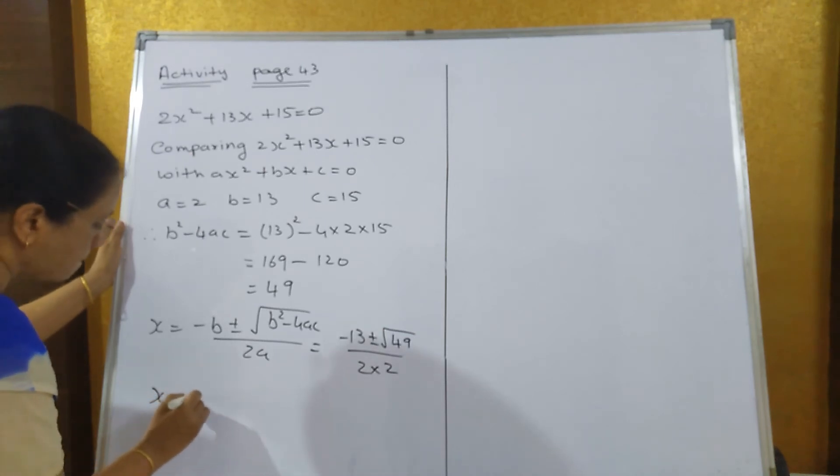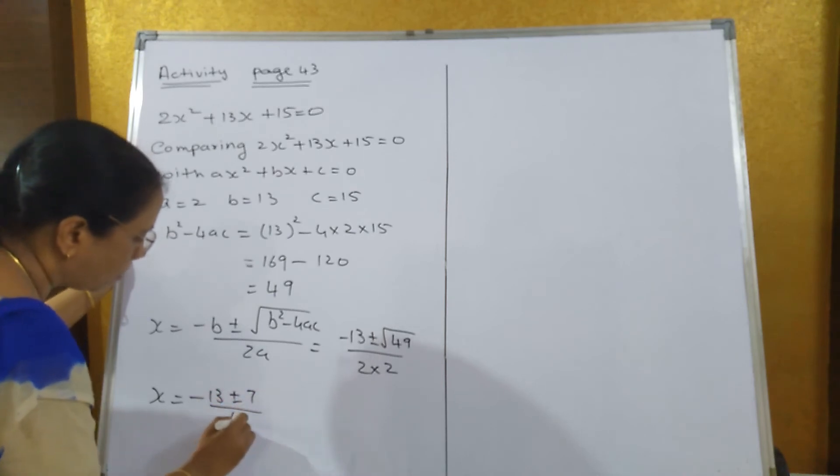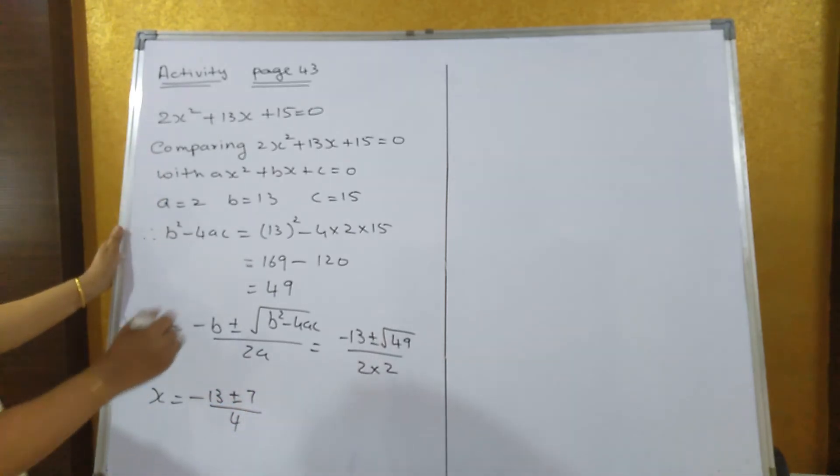So x equals minus 13 plus minus root 49, which is 7, upon 4. So what's the value of x?